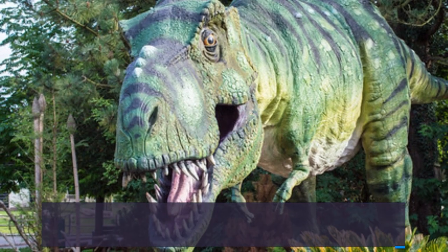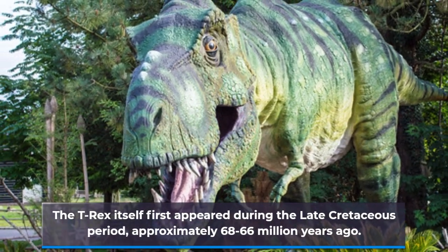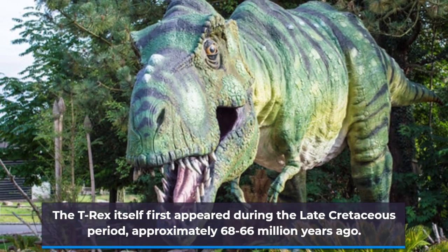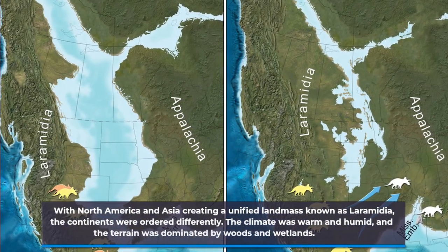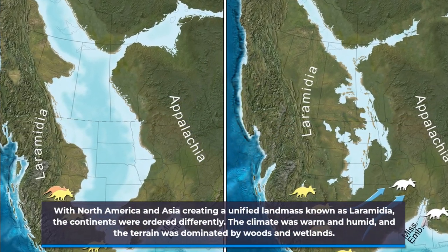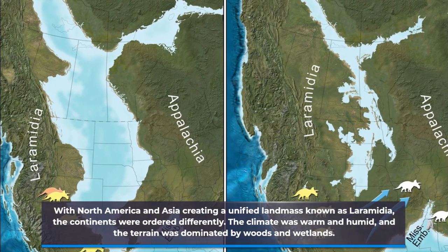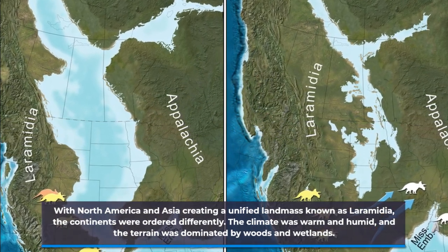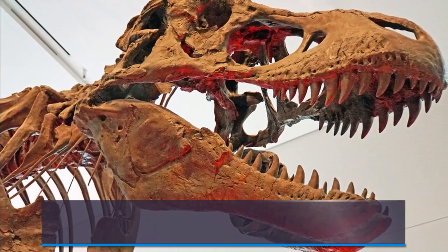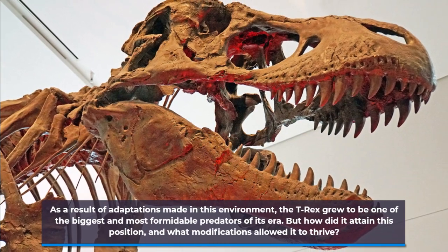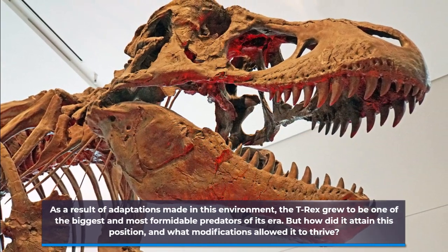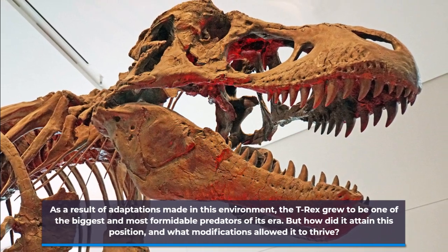The T-Rex itself first appeared during the late Cretaceous period, approximately 68 to 66 million years ago. With North America and Asia creating a unified landmass known as Laramidia, the continents were configured differently. The climate was warm and humid, and the terrain was dominated by woods and wetlands. As a result of adaptations made in this environment, the T-Rex grew to be one of the biggest and most formidable predators of its era. But how did it attain this position, and what modifications allowed it to thrive?